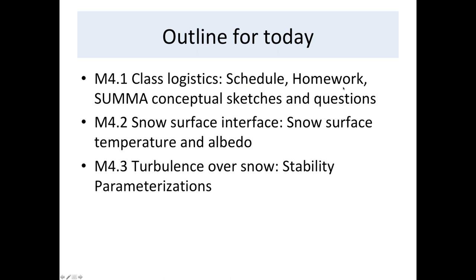The outline for today: we'll start with class logistics, looking at the schedule, talking about the homework, and sharing the conceptual sketches and questions from your first writing assignment. Then we'll go into the snow surface interface — we've been talking about how snow is a boundary layer problem. We'll discuss snow surface temperature, albedo, and turbulence over snow.